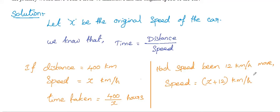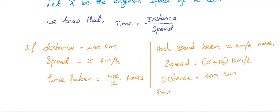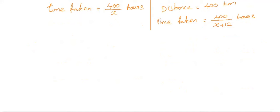The distance will be the same again, which is 400 kilometers, and the time taken becomes the distance divided by the speed, which is 400 divided by X plus 12 hours.